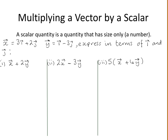Vector x is given as 3i plus 2j, and vector y is i minus 3j. We are asked to express in terms of i and j the following three questions.